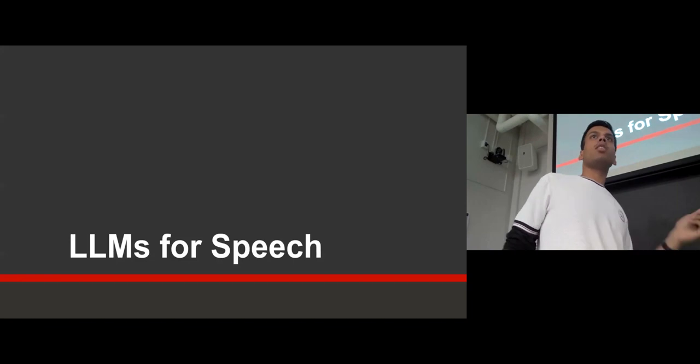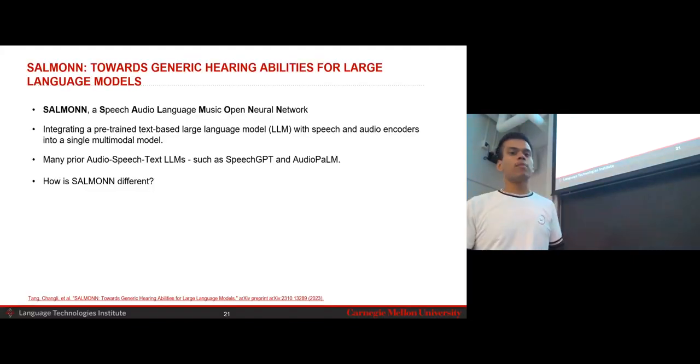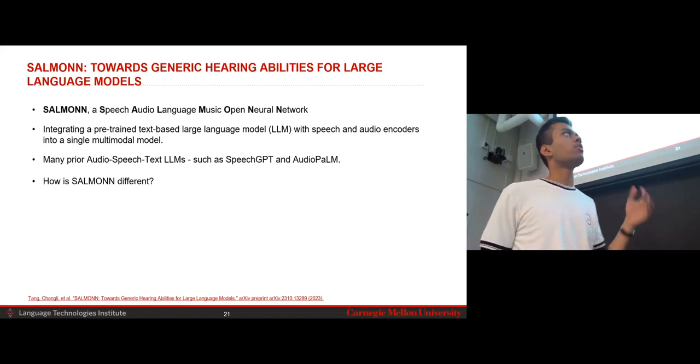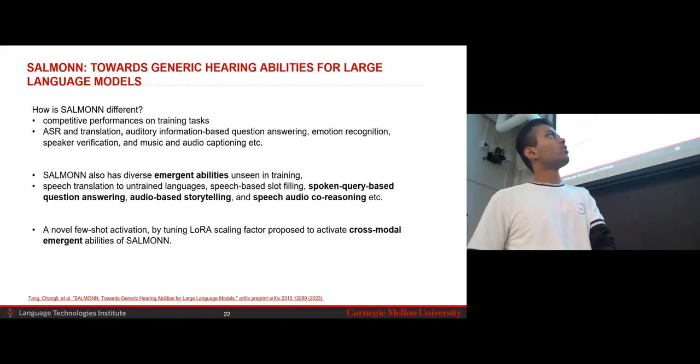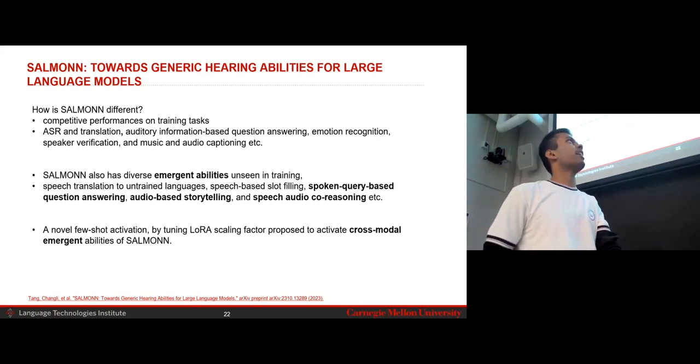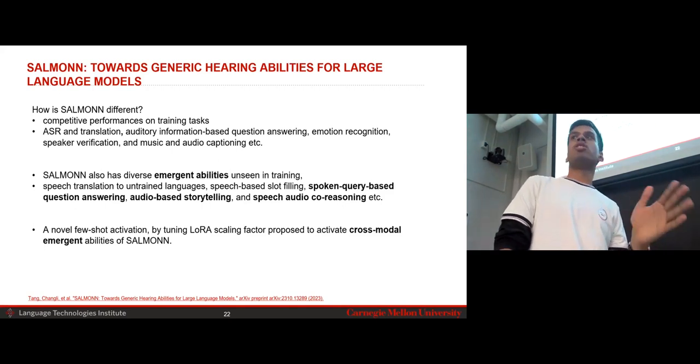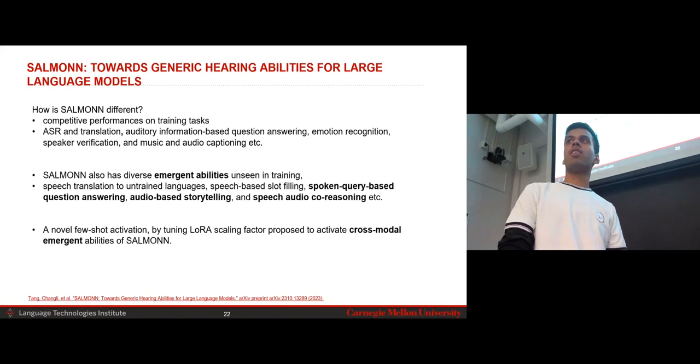Right. So moving on to the next paper, I will now be talking about an LLM for speech and text. So Salman is a paper, which is, or is an architecture, which is introduced to speech, audio and music. And it's, I don't know why it's called open neural network, but yeah. So the idea is that you want to integrate a pre-trained text-based LLM with audio-based encoders. However, you might wonder that there are many prior works in this area. For example, speech GPT or audio pump. These are big models, which essentially do the same. So how is Salman different?